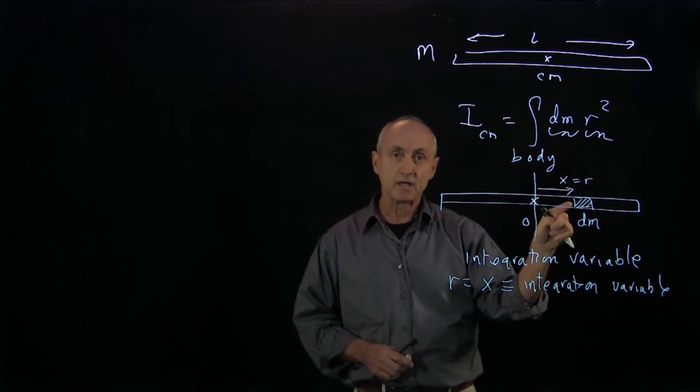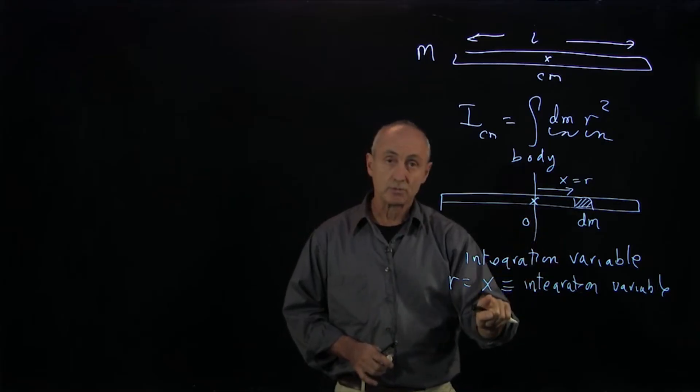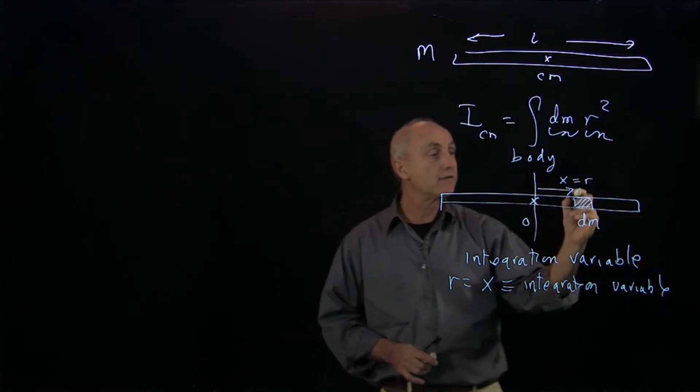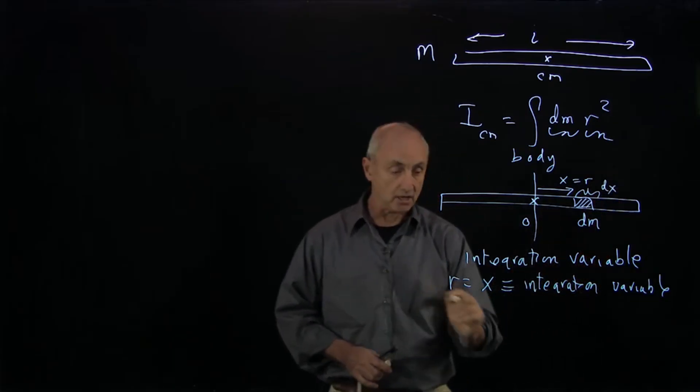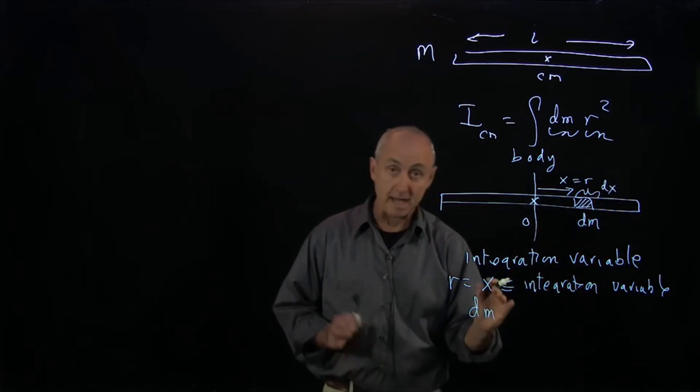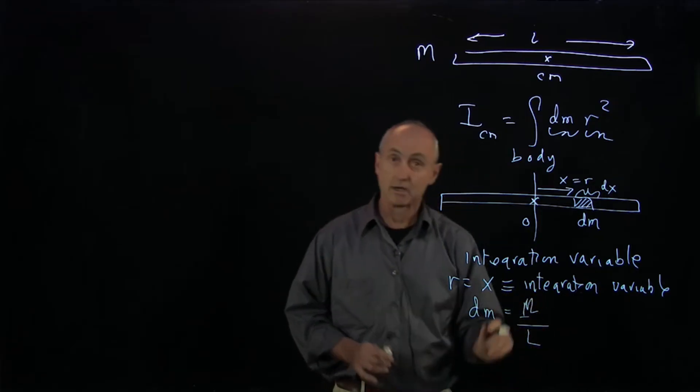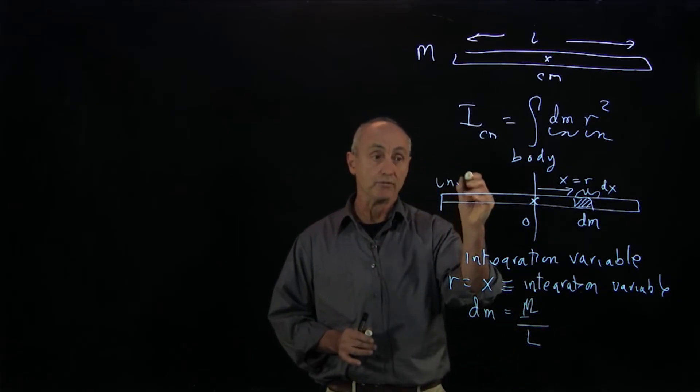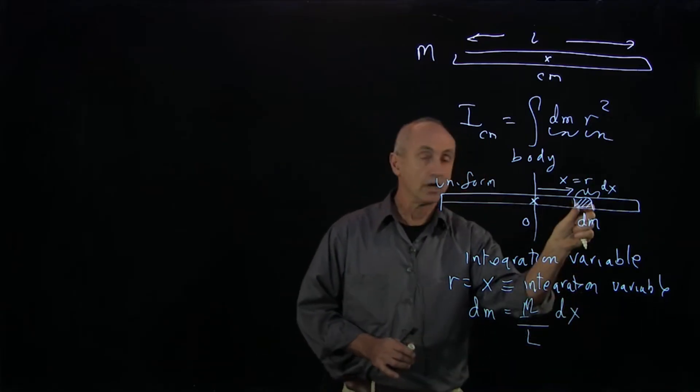The second place the integration variable shows up is in dm. dm is the mass in this small element. If we want to express that in terms of our integration variable, we have to express it in terms of the differential length dx. So dm equals the total mass per unit length—we're assuming the rod is uniform—times the length dx of our small piece.